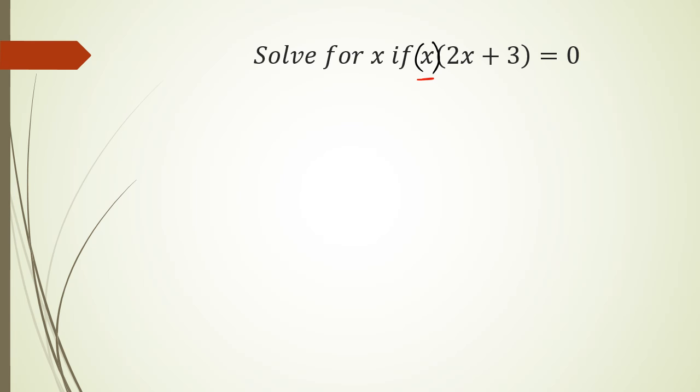Your first number is x and then your second number is 2x+3. Now either one of those brackets has to equal zero, so what we can say is x equals zero or 2x+3 equals zero. Why? Because remember, for you to get an answer of zero when you multiply two numbers, one of those numbers has to be zero.